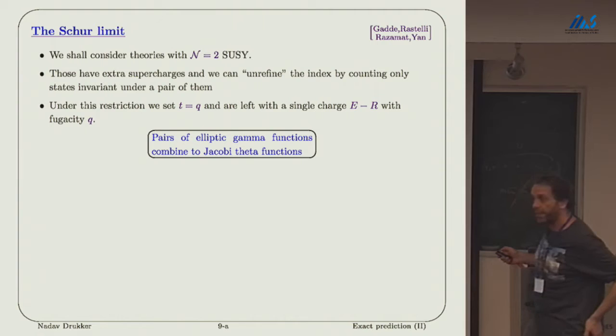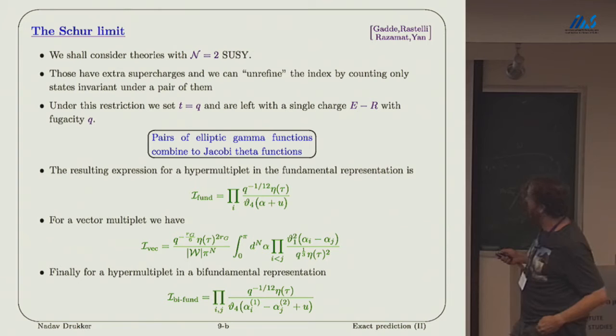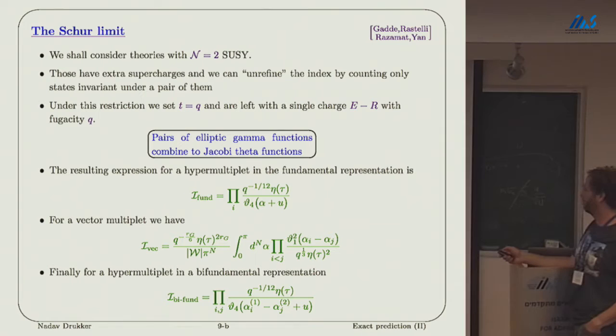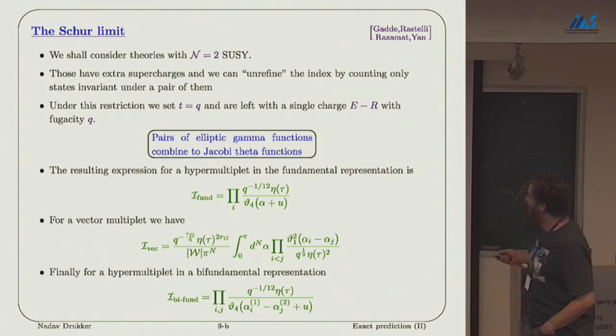The nice thing that happens there is that these elliptic gamma functions combine into Jacobi theta functions, and I'm not going to define them for you because you know what they are. Normally in the literature they are written in terms of Q theta functions, those are related to regular old-fashioned Jacobi theta functions in a very simple way. I just chose here to write it in terms of Jacobi theta functions, and I'm using the conventions of Mathematica.